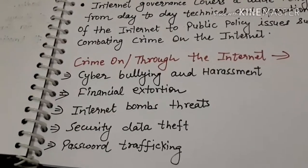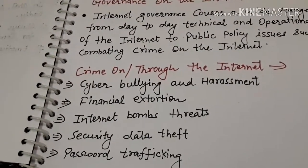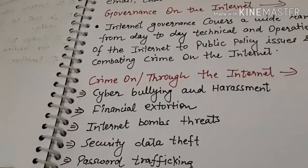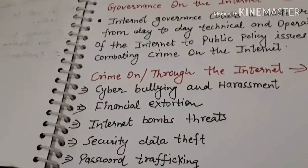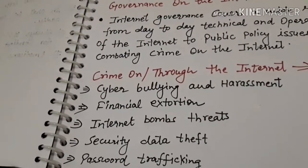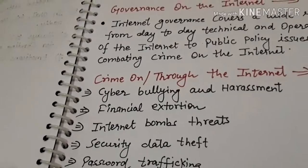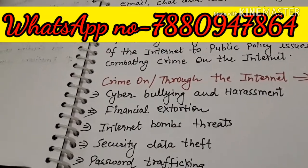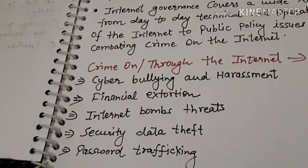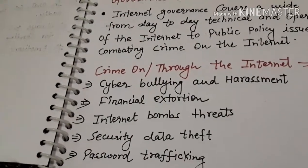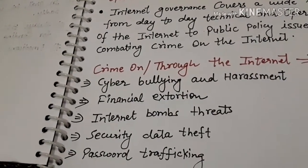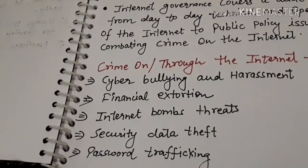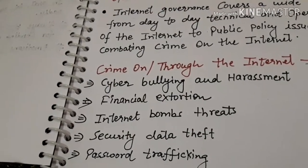What crimes are happening? The first is cyber bullying and harassment. Many people don't have warnings about you. When you have made a website and loaded it, someone can gain access to your personal data. The next is financial extortion — if someone has access to your internet, they can access your password, and if you have enough money in your account, they can access your data.